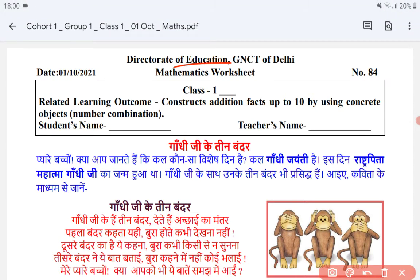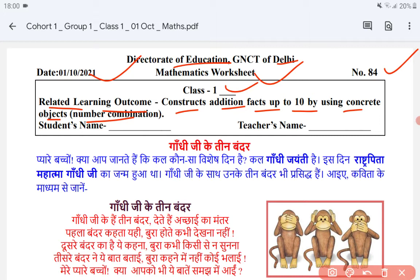This is the Directorate of Education, GNCT of Delhi worksheet for 1st October 2021. Maths Worksheet number 84, Class 1. The learning outcome is: constructs addition facts up to 10 by using concrete objects and number combinations to 10. We will write the student's name and teacher's name here.